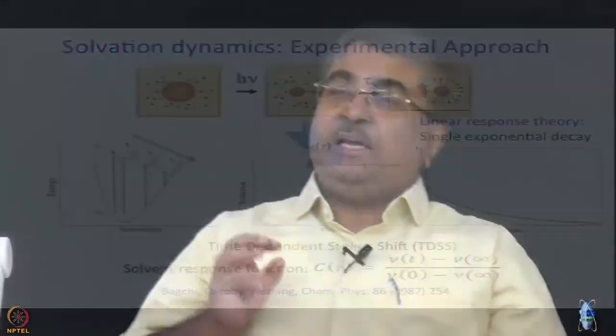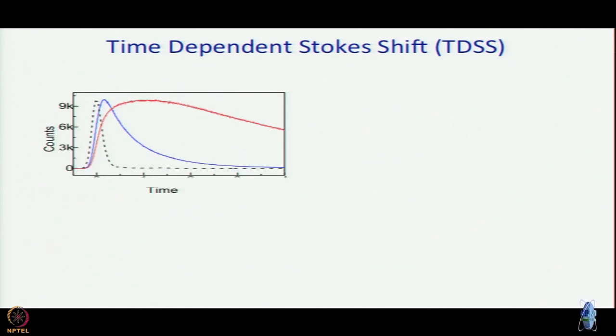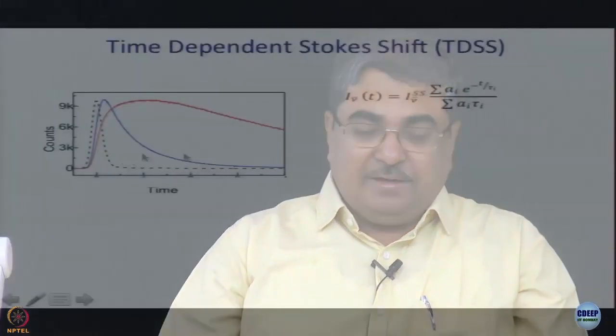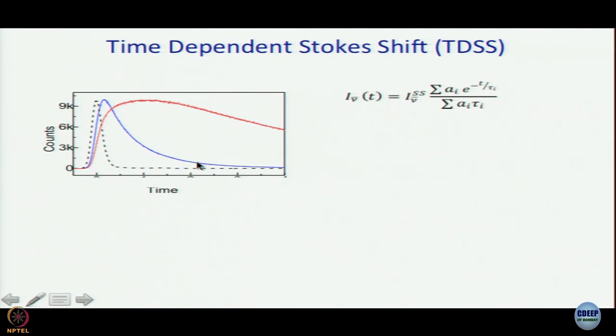The challenge is whether it is possible to assign each solvation time to some mode of motion of the solvent molecule. In time-dependent Stokes shift data, solvation is an excited-state process. You expect a fast decay at the blue end — corresponding to the unsolvated locally excited state — and a rise time at the red end corresponding to the solvated excited state being formed. You fit this time-resolved fluorescence data to a multi-exponential function.